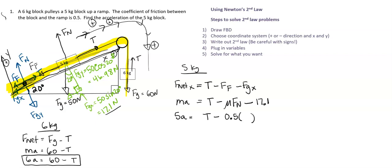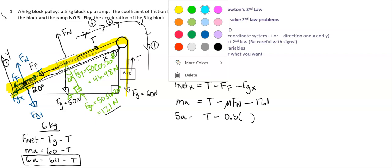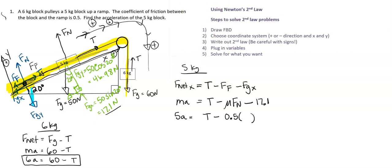and we know that it's not moving in the y direction on the inclined plane. So FGY and FN have to be balanced out. So they have to be equal in this case.